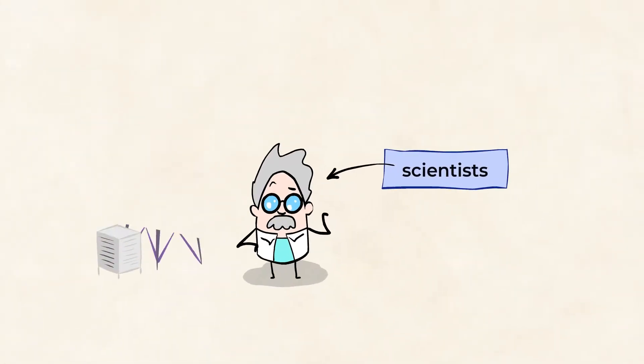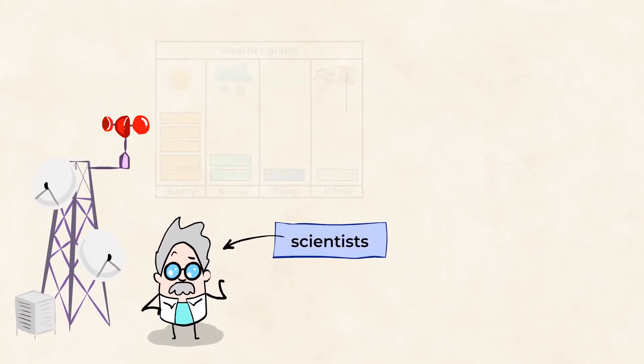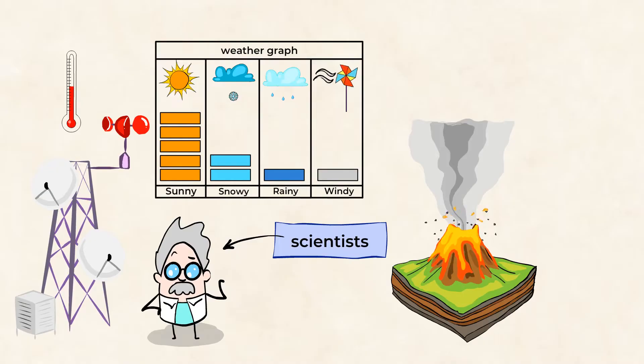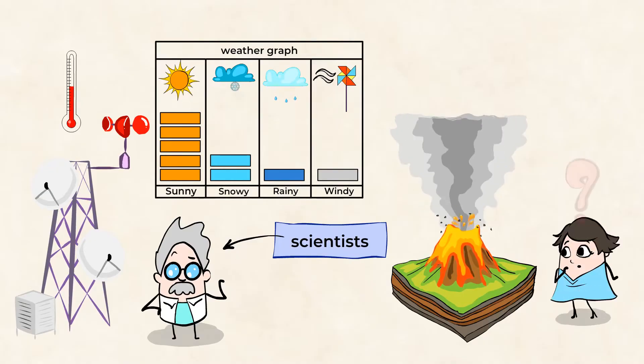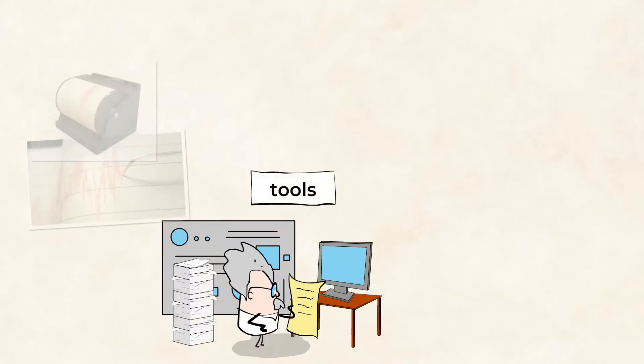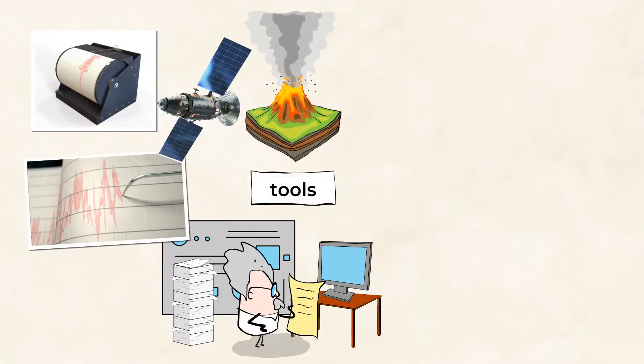Scientists are able to predict a lot of things: when it will snow, what the temperature will be on a given day, and even when a volcano is going to erupt. But how can they possibly know something like that? Scientists use many different tools to closely monitor volcanoes. They are always developing new techniques to help them better predict when an eruption might occur.